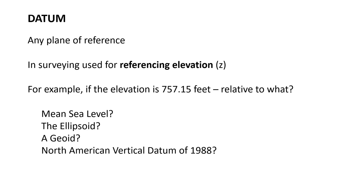So the ellipsoid came to be as a generalized version of that, and then we had to take into account the pull of gravity and how gravity changes on the face of the planet — that's a geoid. We're going to talk about these as we go through, but that's the key question: if we know a benchmark elevation is 757.15, what is that relative to? We reference it to a datum — mean sea level, the ellipsoid, the geoid, or the North American Vertical Datum of 1988.